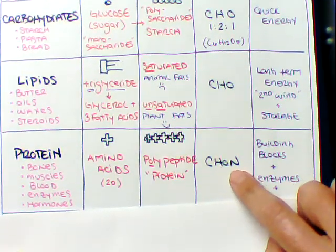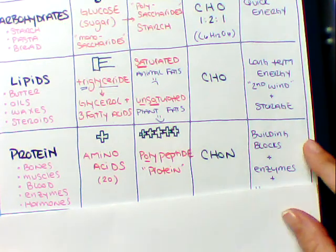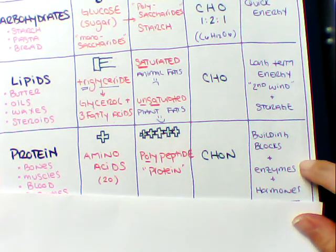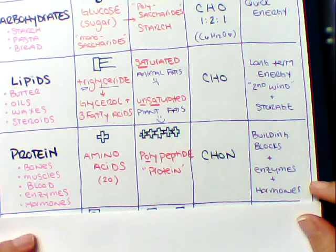Proteins also have CHO, but they also have that nitrogen base. The major function of proteins is to be used as a building block. They help produce enzymes, which help to digest your food and make activation energy lower. And then they also help with your hormones.